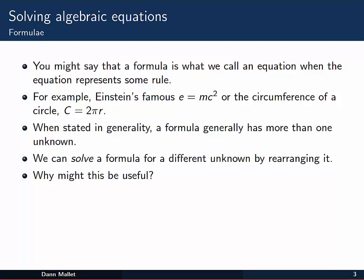When we state formulae in general, the formula often has more than one unknown in it, like in the circumference example, C and r. We can solve a formula for a different unknown by rearranging it. Have a think to yourself why that might actually be useful.